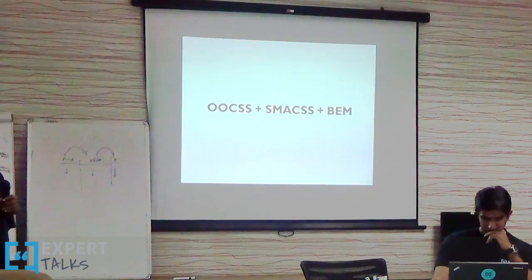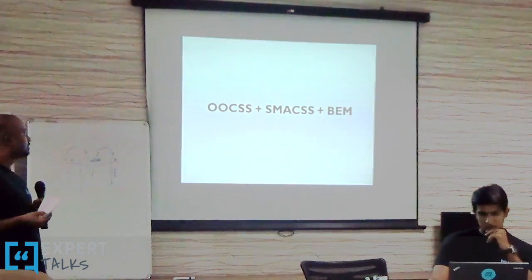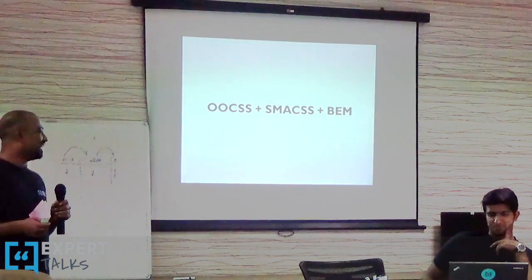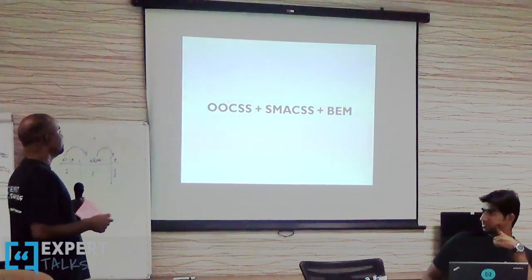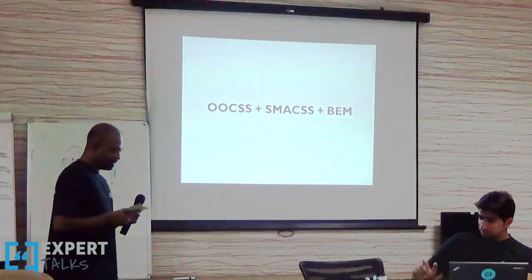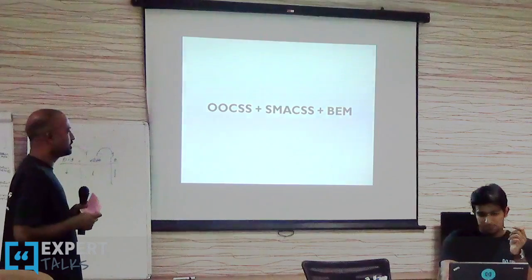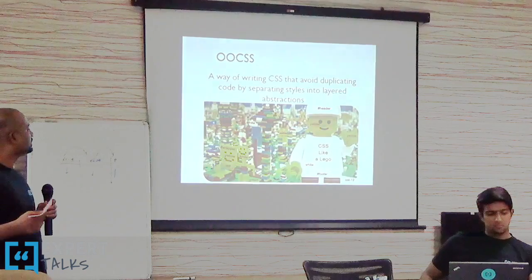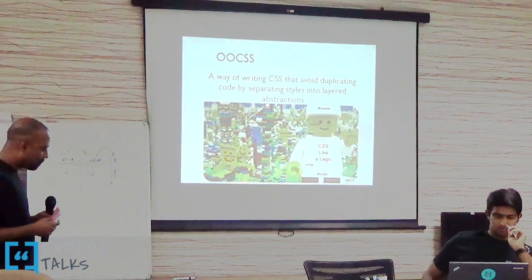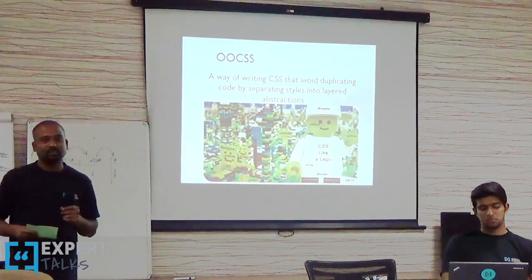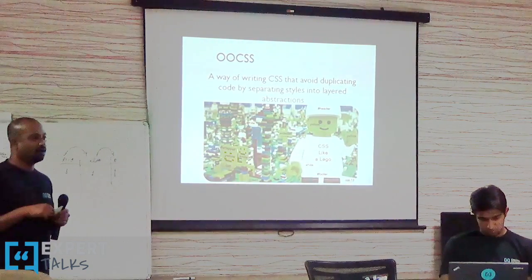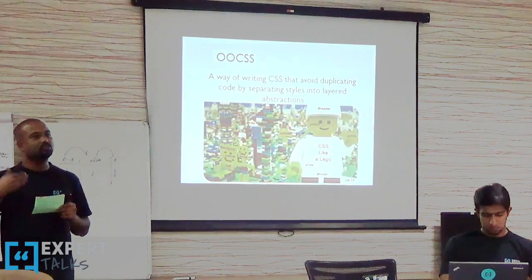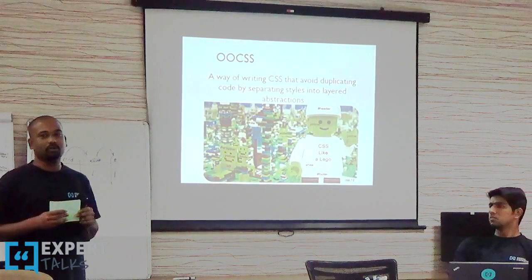I wanted to talk about Object-Oriented CSS, SMACSS, and BEM. SMACSS stands for Scalable and Modular Architecture for CSS, and BEM stands for Block Element and Modifier. Object-Oriented CSS is a way of writing CSS that avoids duplicating code by separating styles into layered abstraction. The basic idea behind Object-Oriented CSS is to identify modules or design patterns in your code and try to reuse those design patterns instead of reusing the whole complete component.